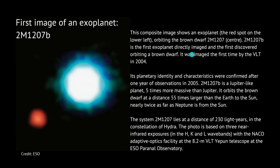There was a first planet that we as humans discovered. This is the image of the first exoplanet mankind ever took. Here we have a beautiful star — a brown dwarf — and this little red dot here is our first exoplanet with the beautiful name of 2M1207b.